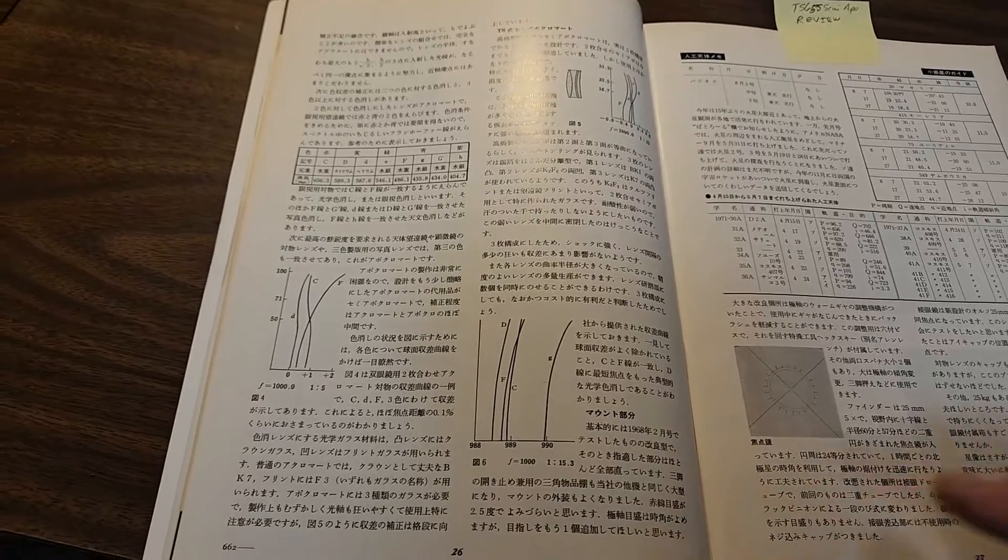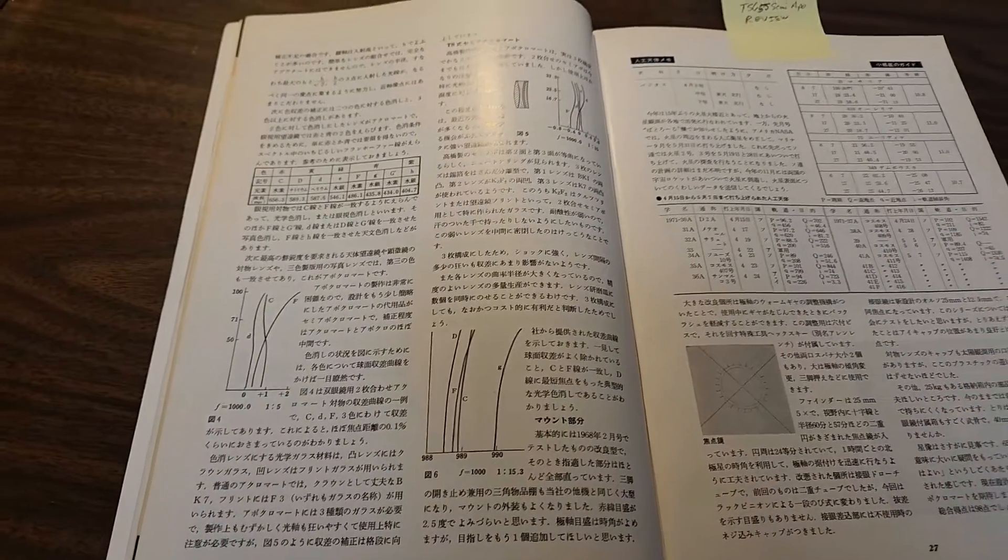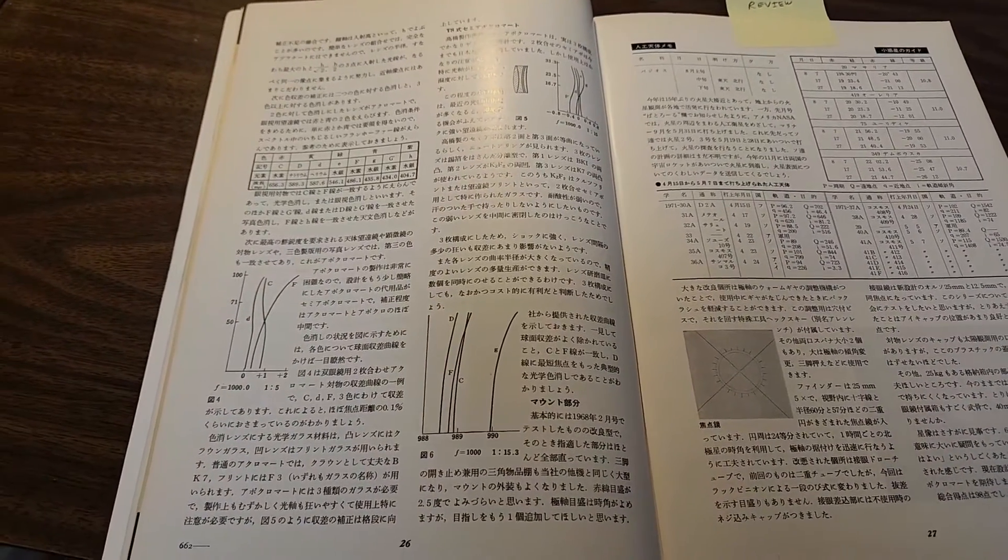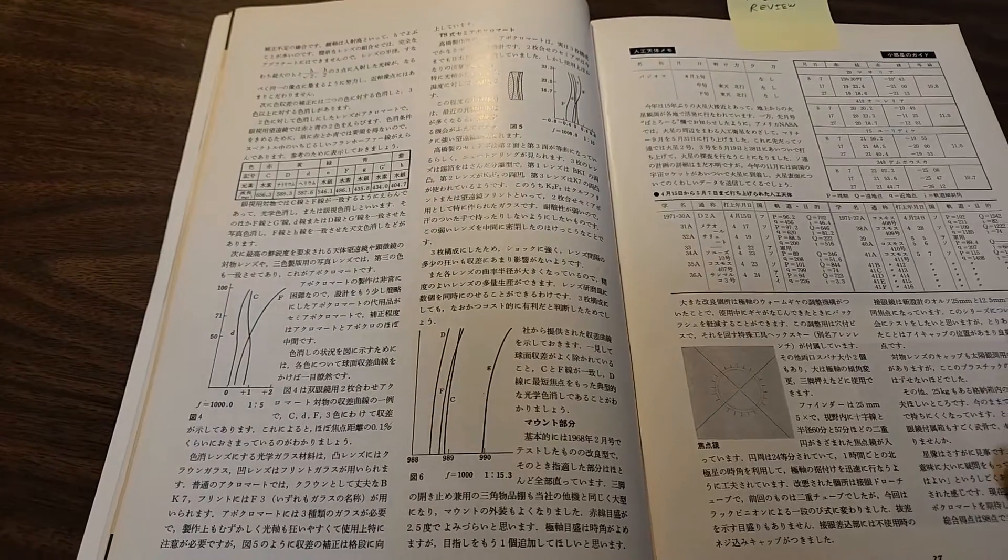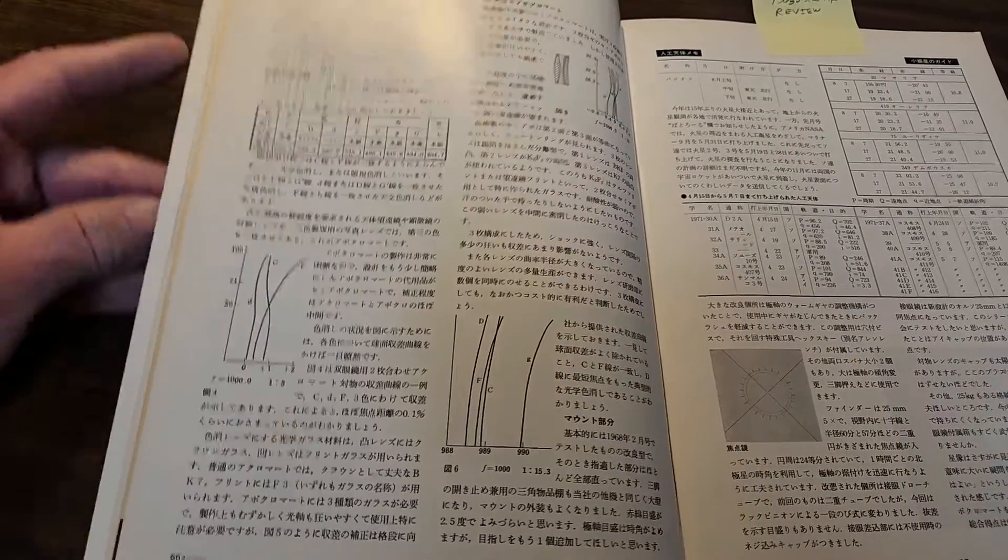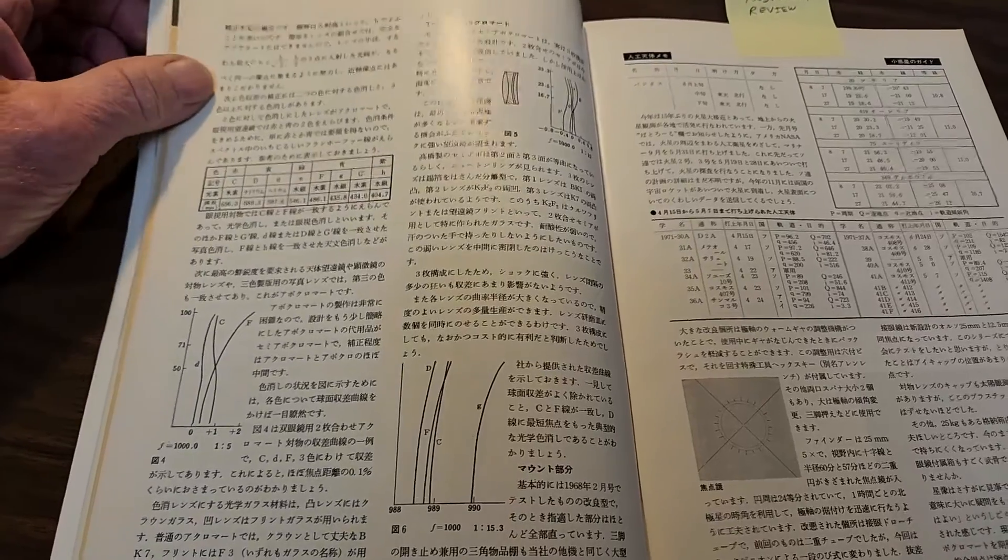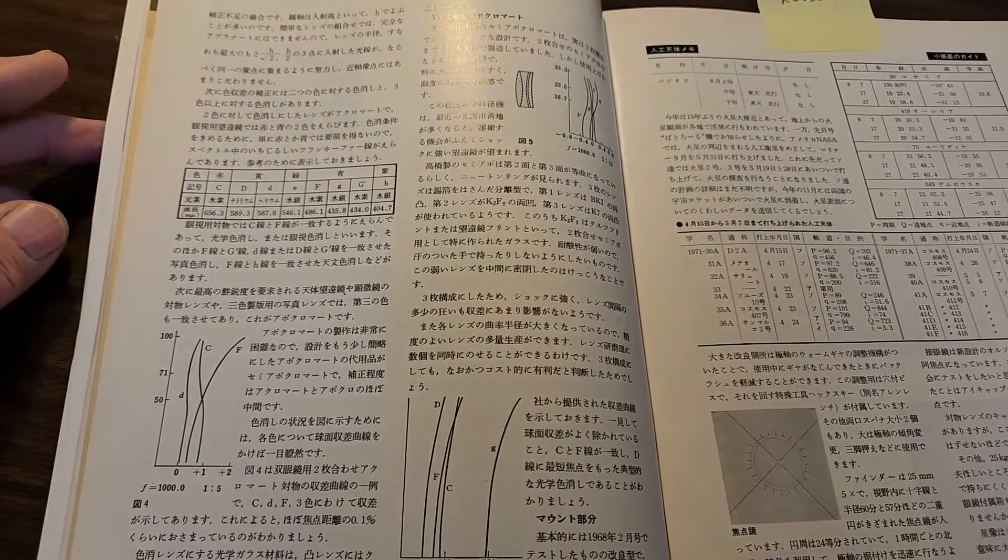Although this is a review of the S model, it's also a review of the D model, which they didn't do an official review of the D model. This is a review of the same optics that are in both the S and the D, the triplet semi-apochromat.